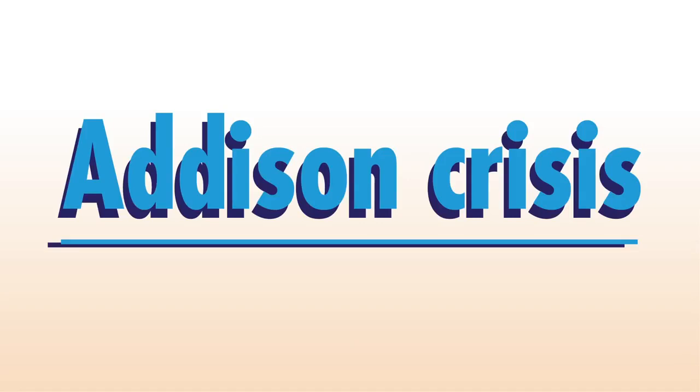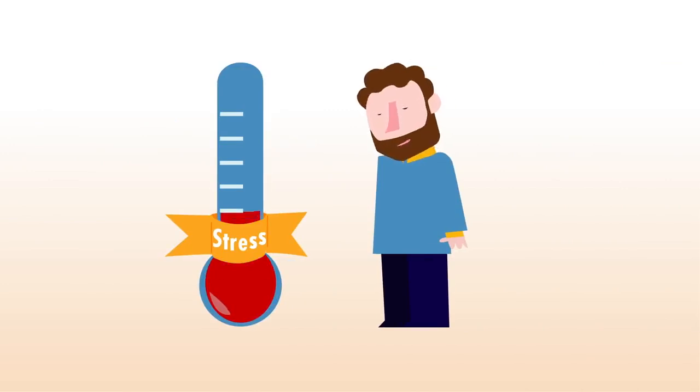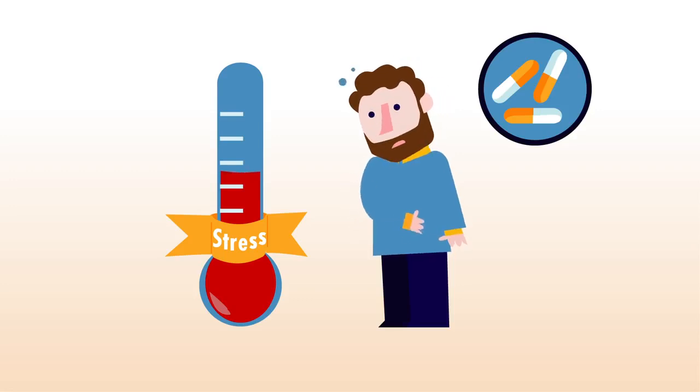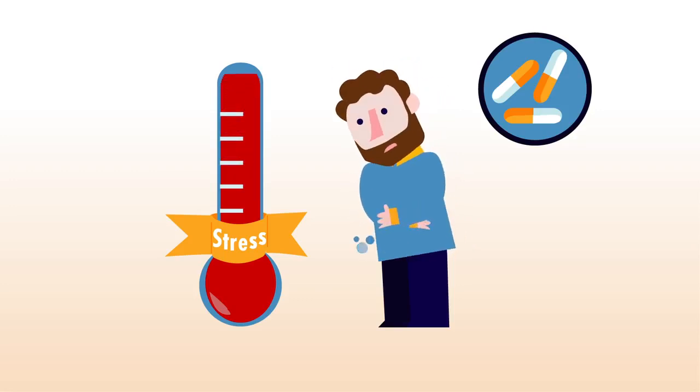So what is an Addison Crisis? It's a very serious stress situation where your normal dose of stress hormone isn't enough anymore. In situations like this, your body has a huge shortage of stress hormone, and this can be life-threatening.